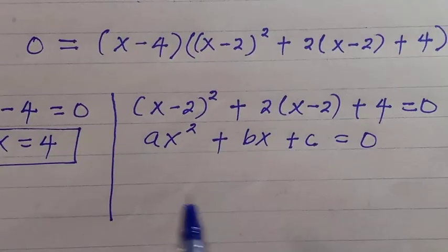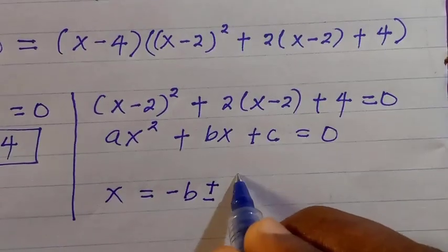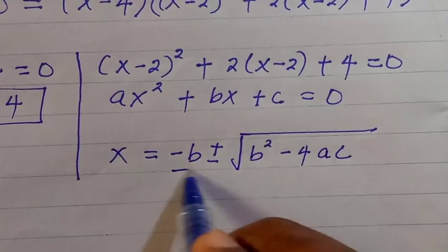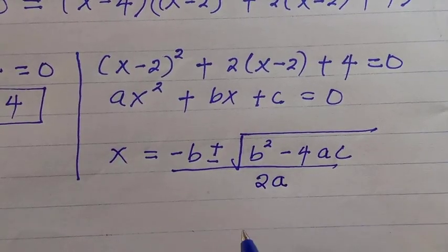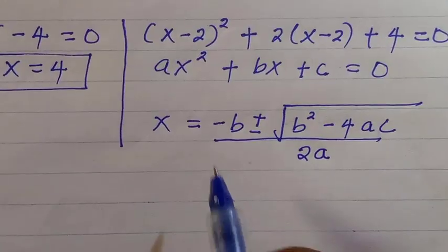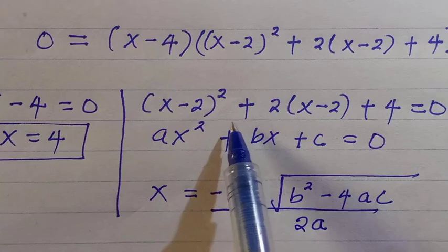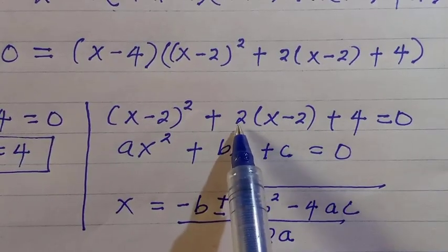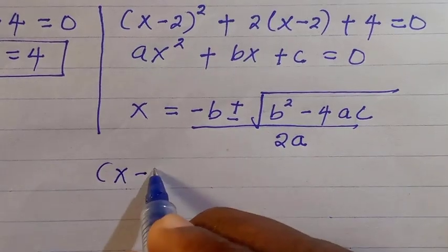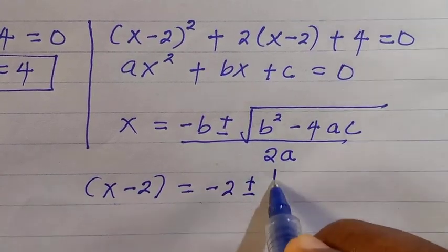The quadratic formula is x equals minus b plus or minus the square root of b squared minus 4ac, divided by 2a. Since our variable is x minus 2, a is the coefficient of x minus 2 squared which is 1, b is 2, and the constant c is 4. Therefore x minus 2 equals minus 2 plus or minus the square root of 2 squared minus 4 times 1 times 4, all divided by 2.